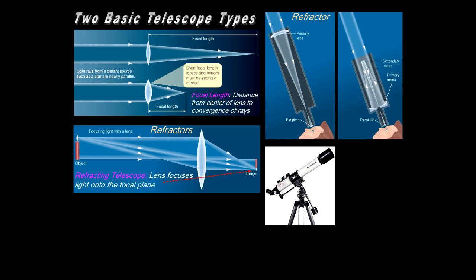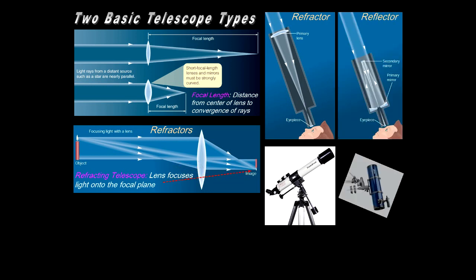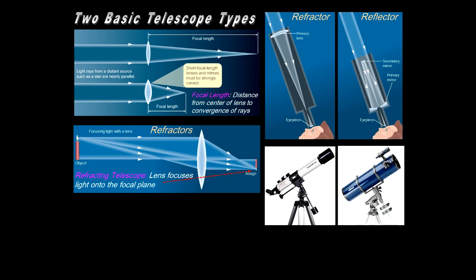The other kind of telescope is the reflector, and it does just what it sounds like, which is reflecting light. You can see the light coming in, reflecting off the primary mirror to a secondary mirror, bouncing off of that, and then to the eyepiece.